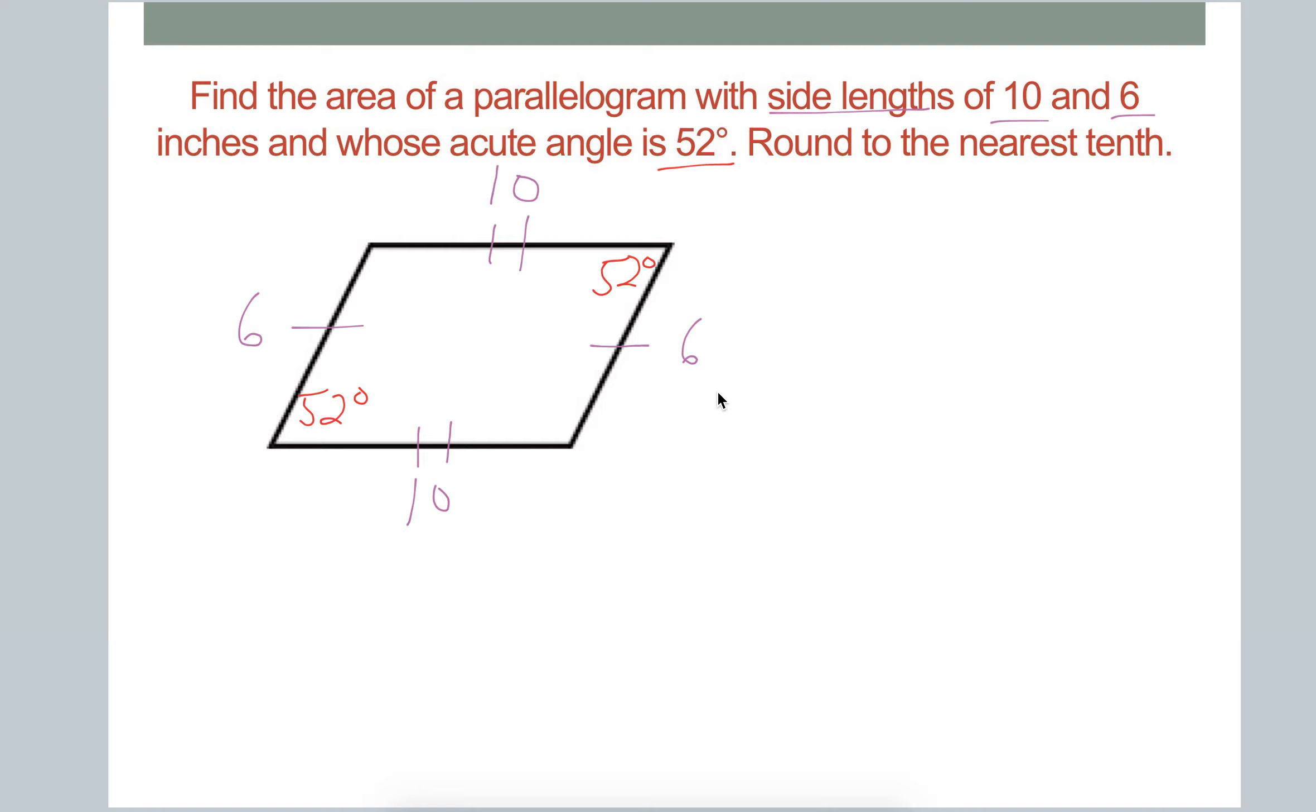So now, if we're looking for the area, the area of a parallelogram, the formula is base times height. Remember the key for calling things base and height is that they have to be perpendicular to one another. So for example, right now, I can't just do 10 times 6 because 10 and 6 are not perpendicular to one another. This is an angle of 52, not 90.